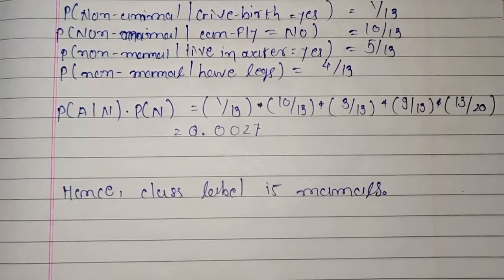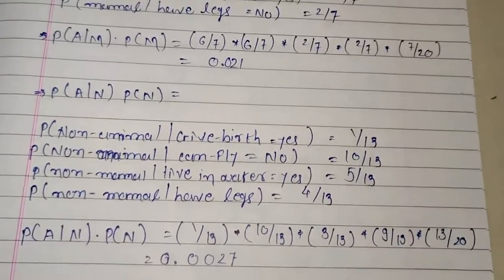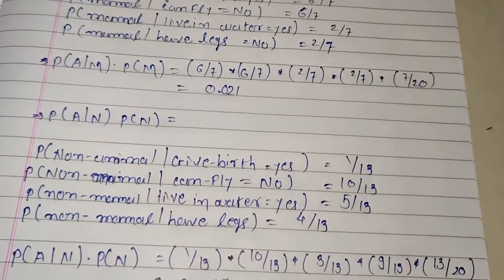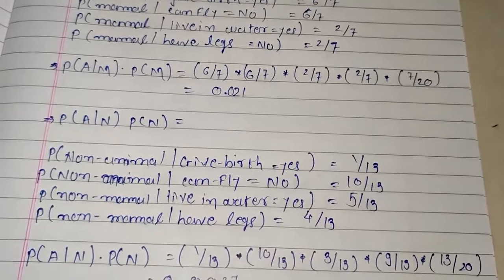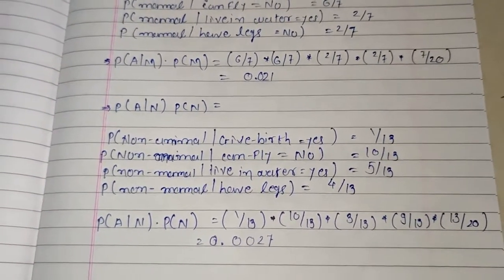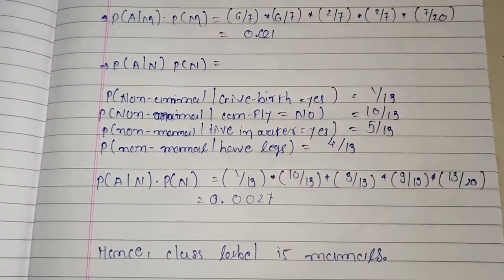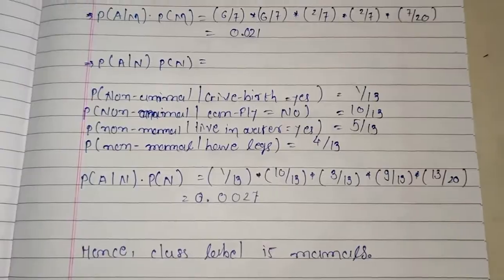Here you can see that we compare mammal and non-mammal probabilities. Mammal's probability is greater than non-mammal. Then, the class label is mammals.